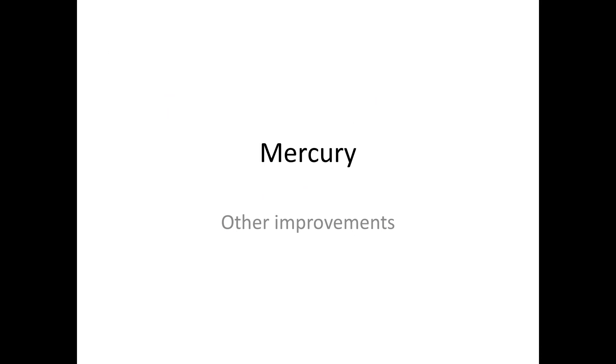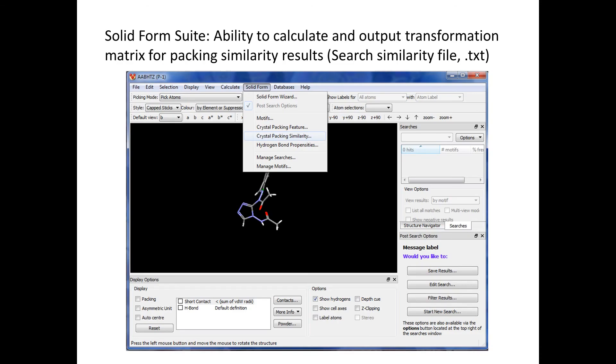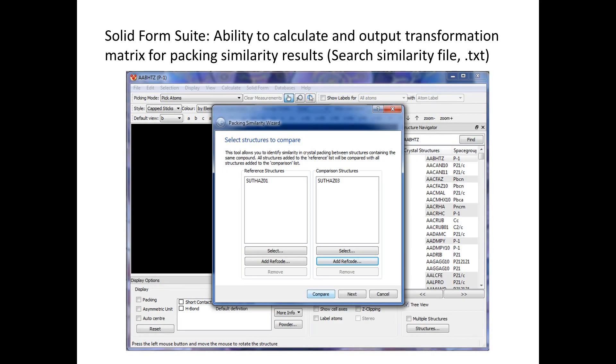There were other improvements in Mercury. One other improvement is regarding the solid form suite. We now have the ability to calculate and output transformation matrices for packing similarity results. To access that, you go to the solid form menu and click on crystal packing similarity, and you compare, let's say, these two structures.